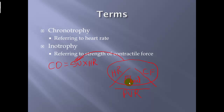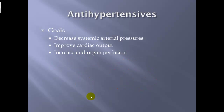Peripheral vascular resistance keeps pressure on the heart but can also work against it. If PVR or systemic vascular resistance increases higher than what the left ventricle can pump against, there's a problem — you will generally go into congestive heart failure. The goals of antihypertensives are to decrease systemic arterial pressures, improve cardiac output, and increase end-organ perfusion.